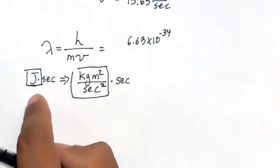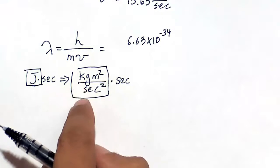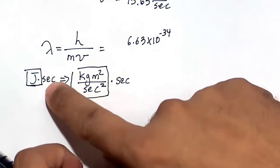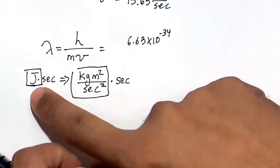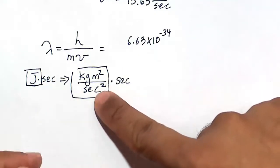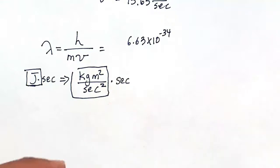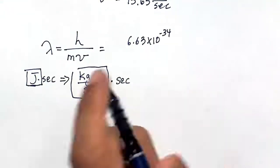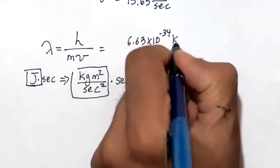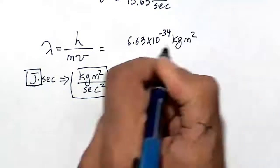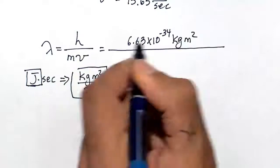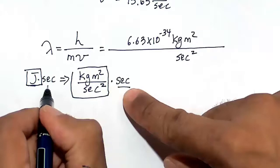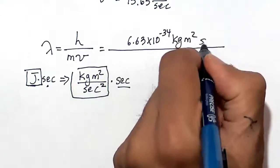A joule is actually equal to a kilogram meter squared per second squared. Planck's constant is joules times seconds as the customary units. But instead of joules, I'm going to replace it to what it really is in SI base terms. So Planck's constant here is 6.63 times 10 to the minus 34 kilogram meter squared divided by seconds squared. Don't forget that second here from Planck's constant, so I'm going to add another second.